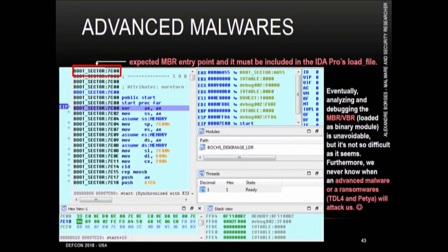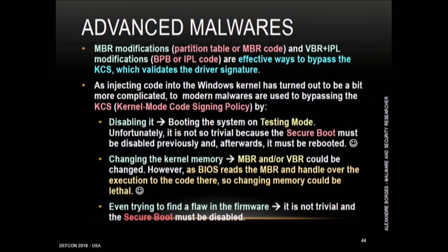Here we have a real case about malware such as TDL4 or Alureon, which encrypts and infects the MBR. The trick is to load a good MBR and the malicious one in IDA Pro and emulate them using the Bochs emulator, to make analysis easier. MBR and VBR modifications are effective ways to bypass KCS — Kernel Mode Code Signing policy. KCS is responsible for validating driver signatures. There are some ways to bypass KCS: disable it, put Windows in test mode (but secure boot must be disabled), change kernel memory, or find a flaw in the firmware.